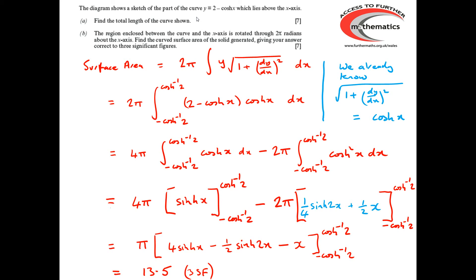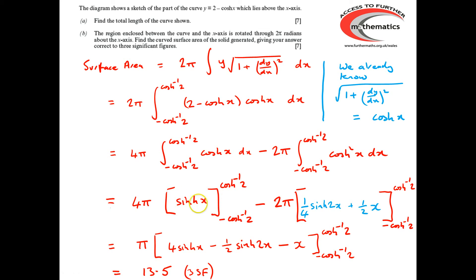For the second part of the question: two marks for arriving at the expression for the surface area, one mark for splitting it sensibly, one mark for working out the integral of cosh² x, one mark for writing down the integral of cosh x, and two final marks for finding the correct final value of the integral.